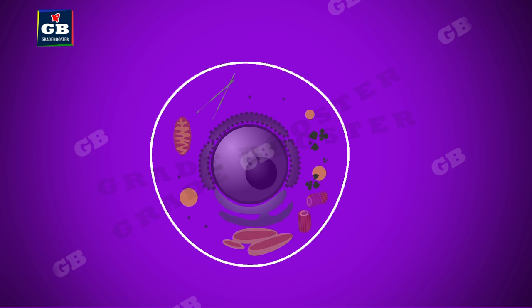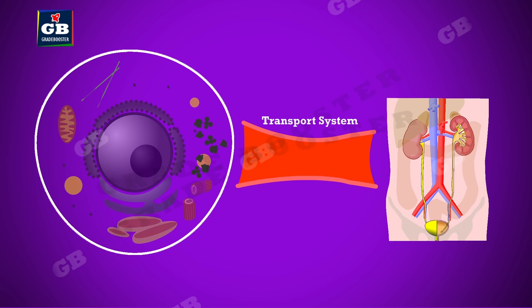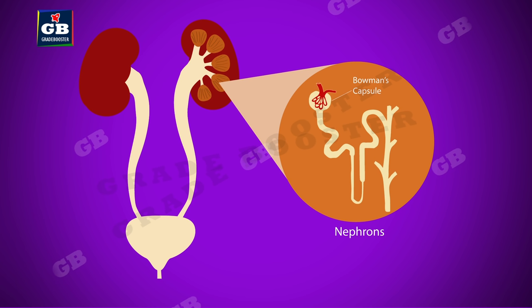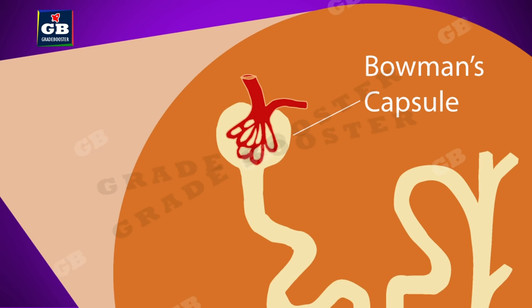Now let's see excretion in human beings. Cells produce nitrogenous compounds like urea and uric acid as part of their activity; these are toxic and must be excreted from the body. Blood collects these compounds and carries them to the excretory system to filter them out. The human excretory system consists of a pair of kidneys, two ureters, a urinary bladder, and urethra. Nephrons are the functional units of kidneys which actually filter the blood.